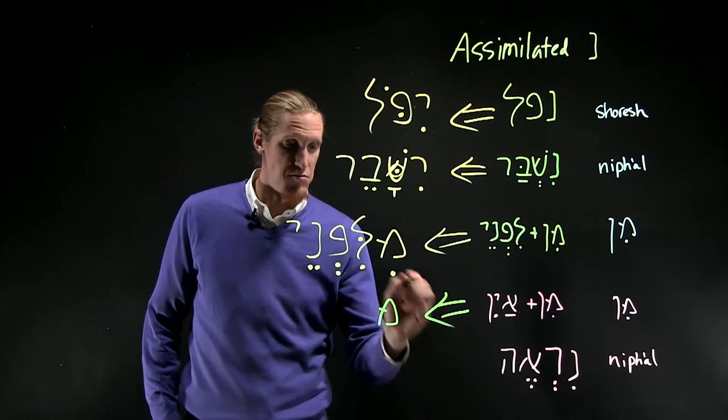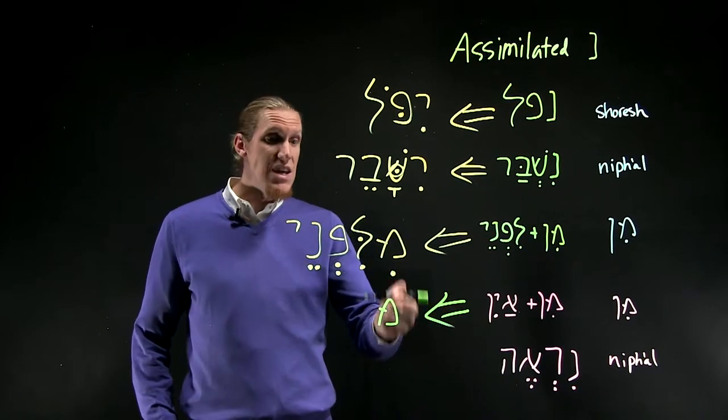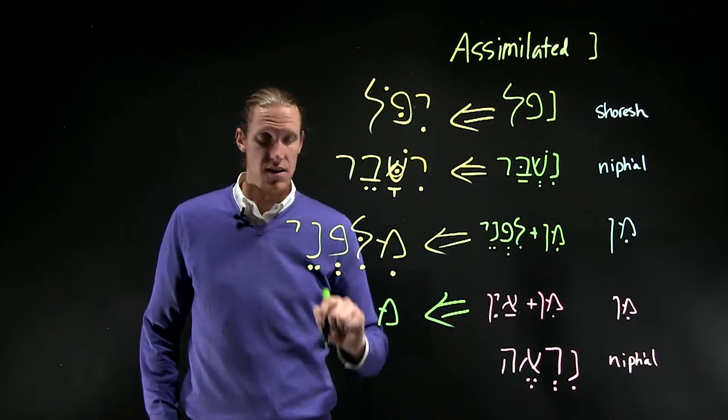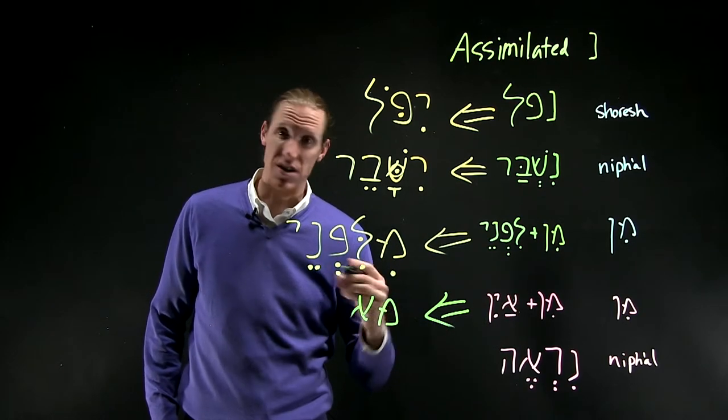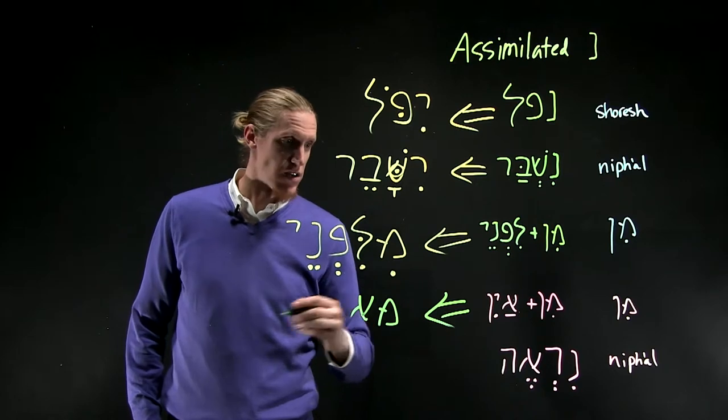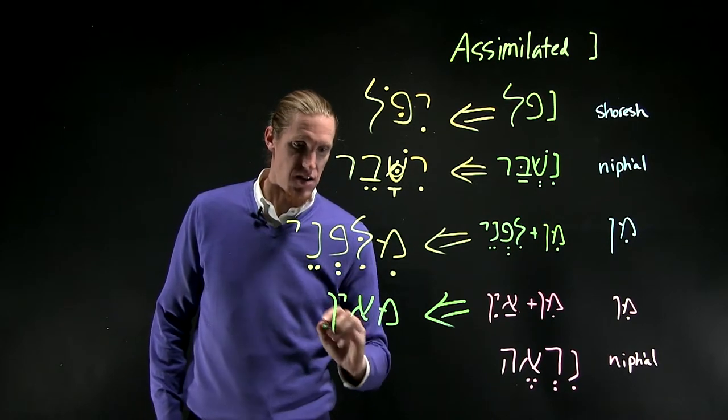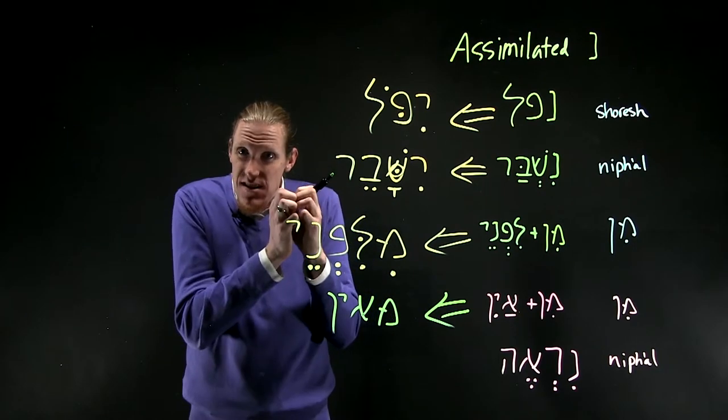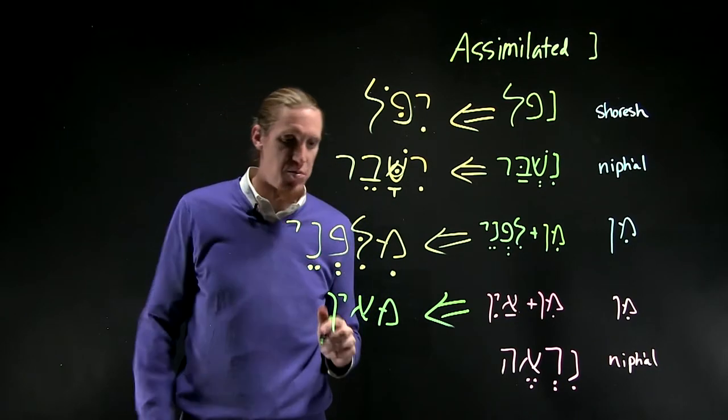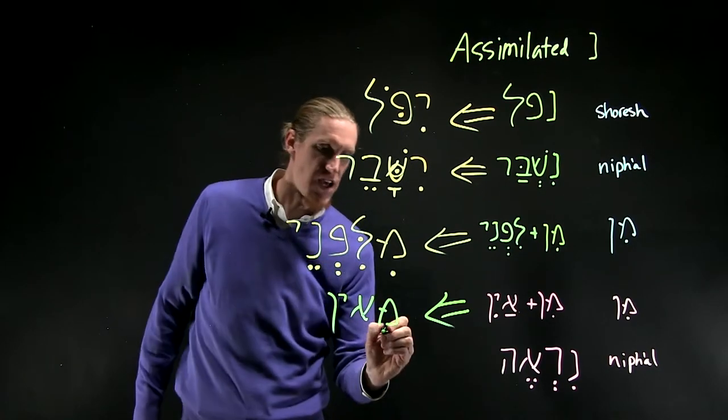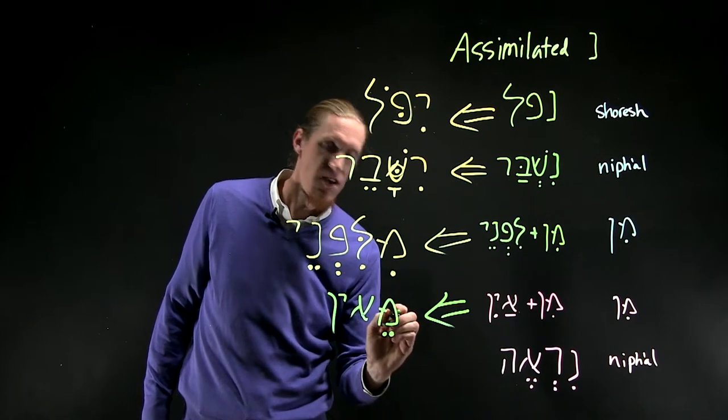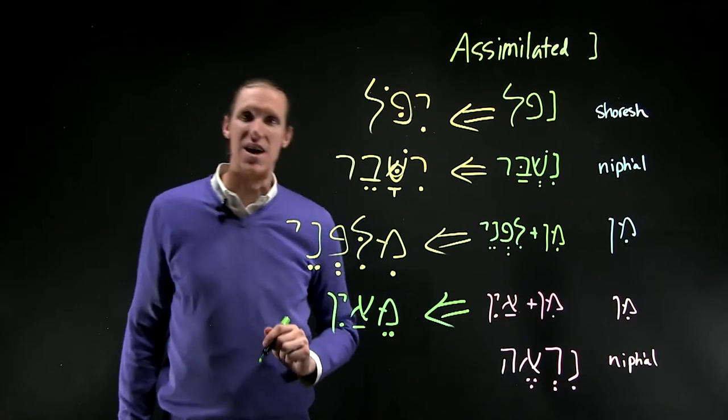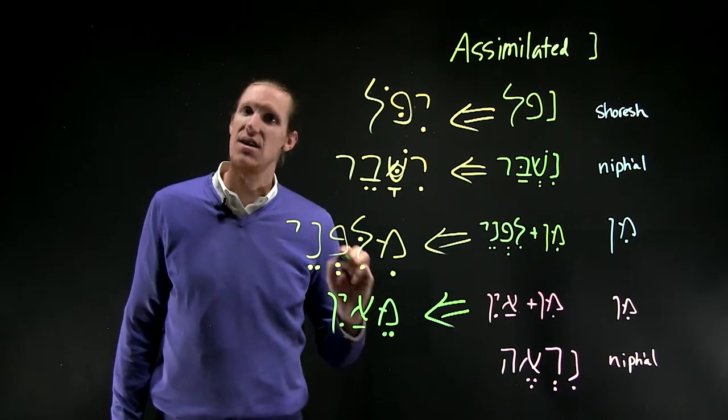we have not me-ein because the noon can't assimilate into the aleph because the aleph is a guttural and gutturals reject assimilated noons. And the dot that the noon has rolled itself up into is rejected by the aleph and it lengthens the hirik to a tsere. You might say it tsere-rizes the hirik.